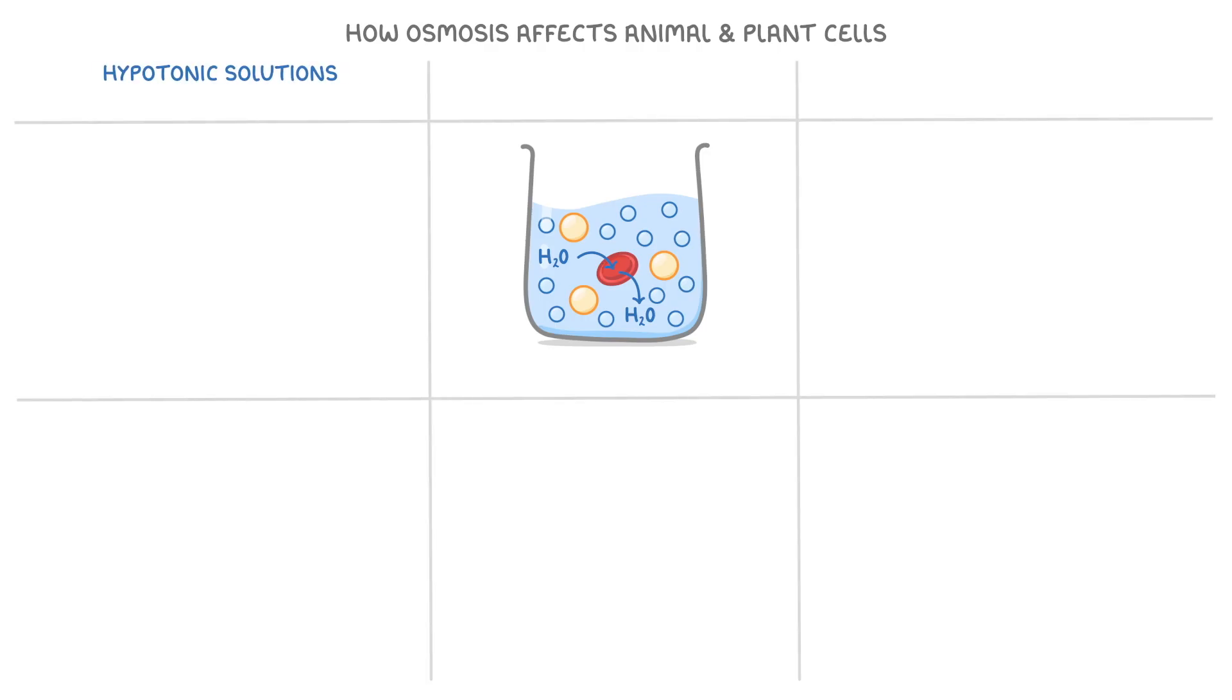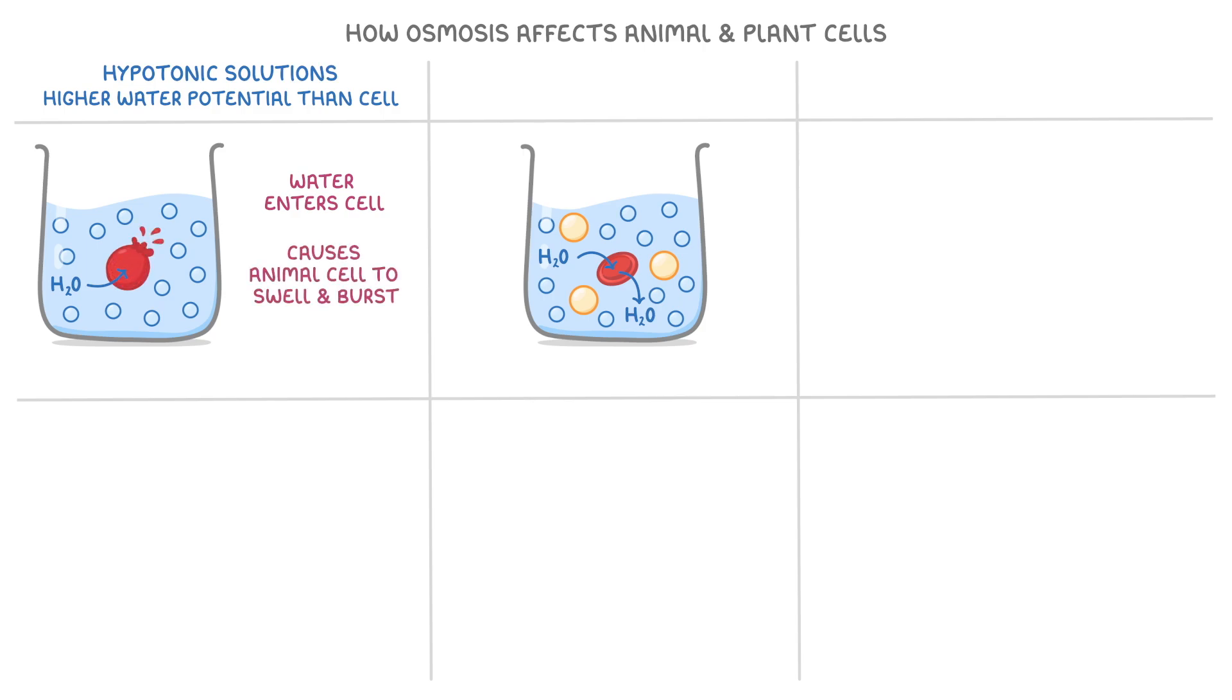Starting with hypertonic solutions, these are those that have a higher water potential than the cell. When an animal cell like this one is placed in a hypertonic solution, water enters the cell by osmosis, from an area of high water potential in the solution, to an area of lower water potential in the cell. This causes the animal cell to swell and possibly burst if too much water enters into it.